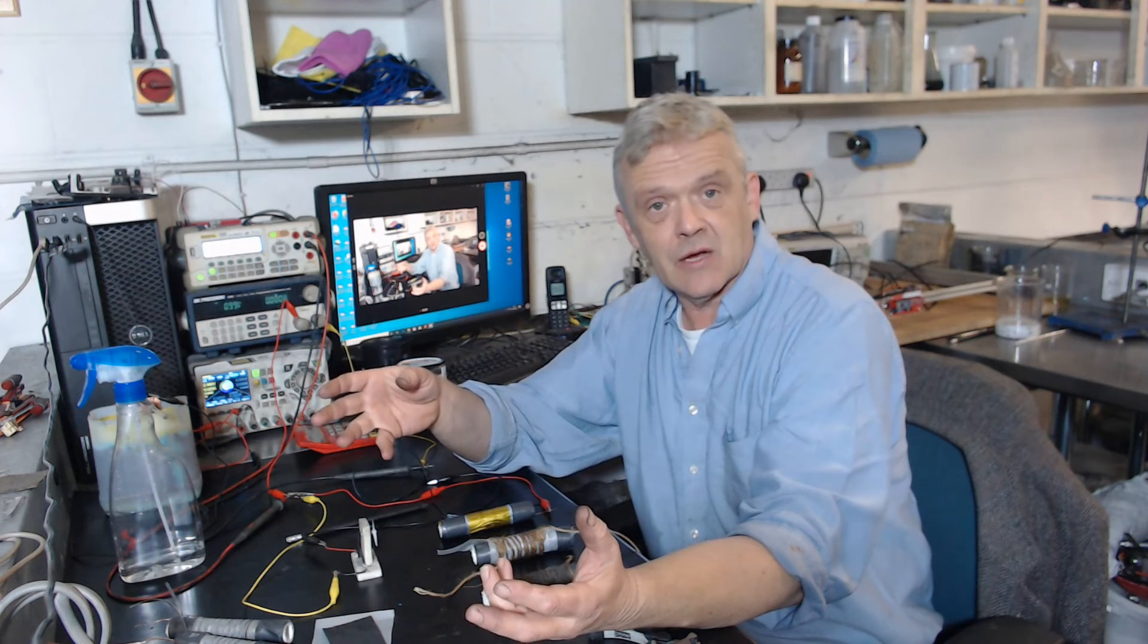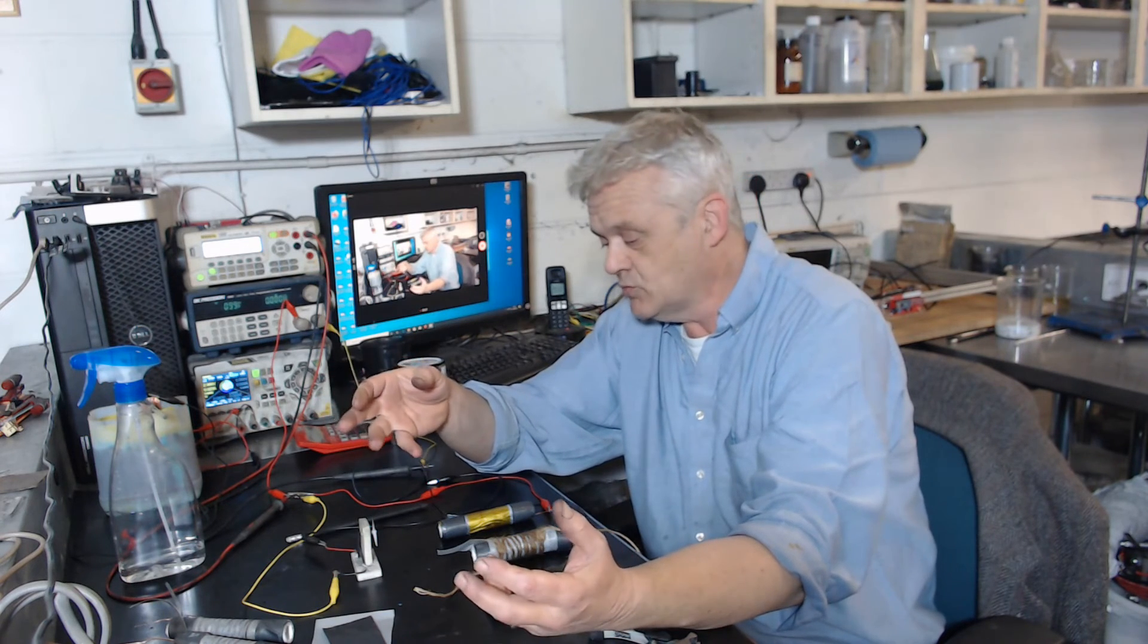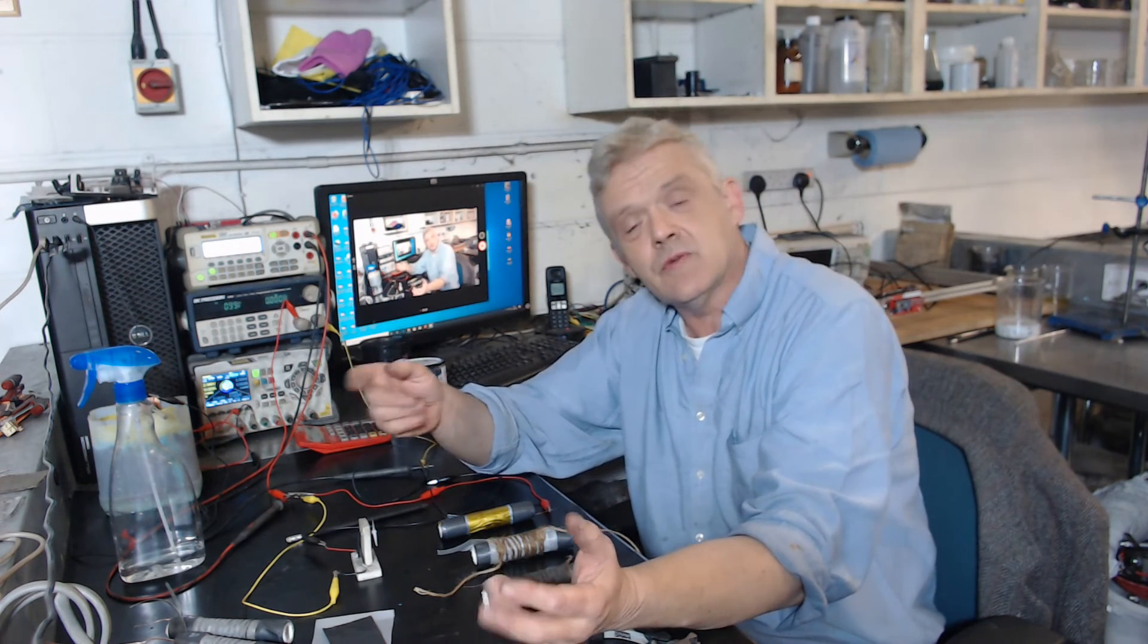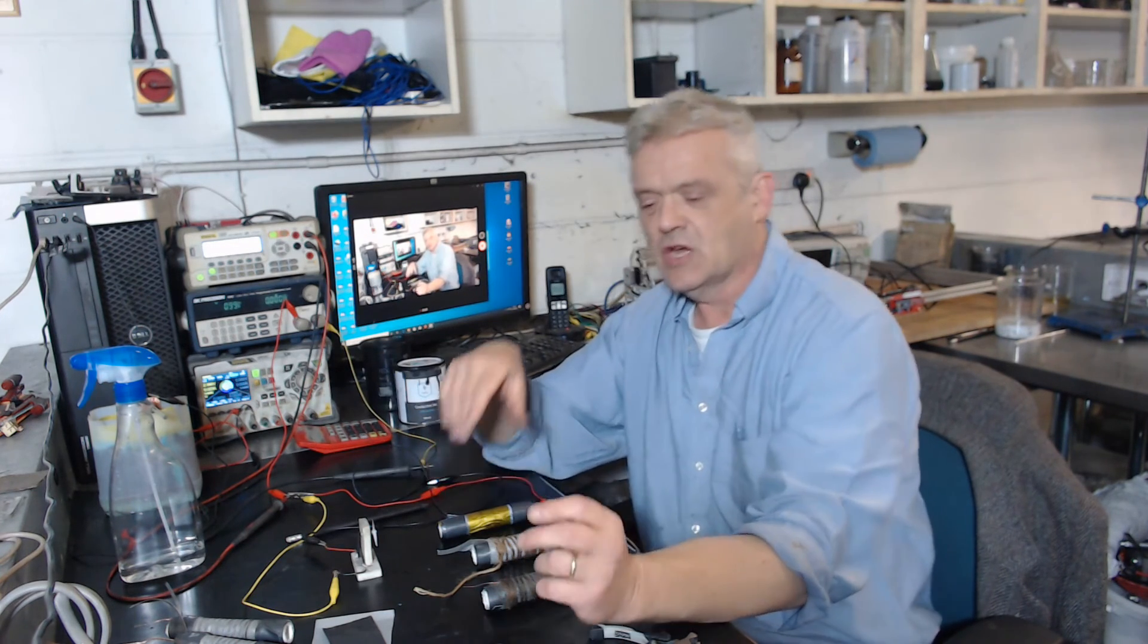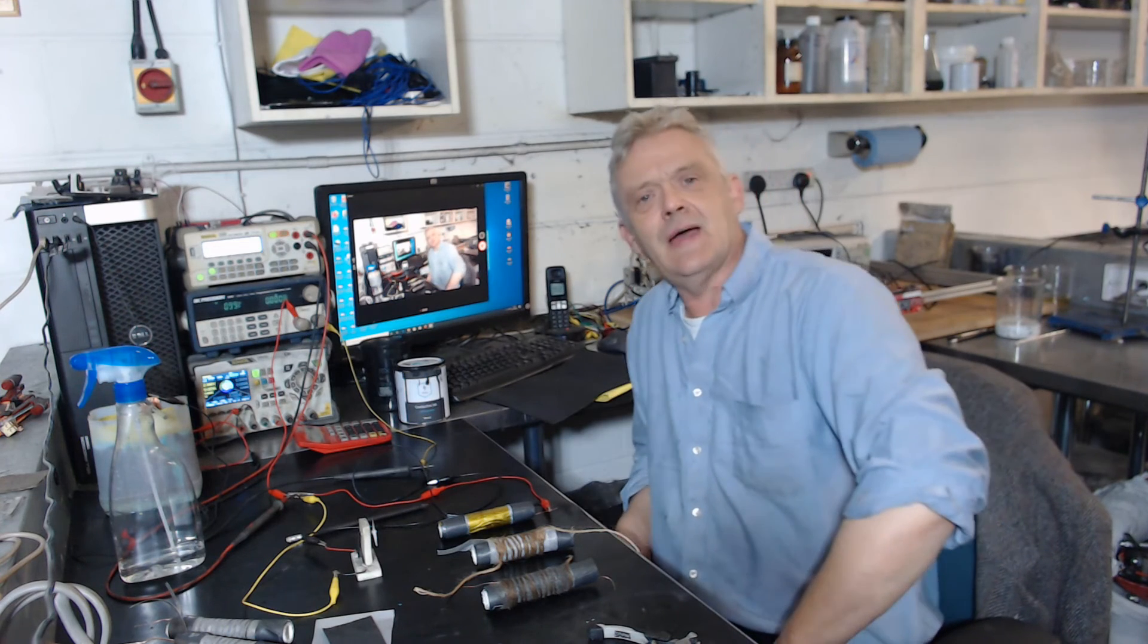whatever you happen to have lying around: aluminum, zinc, even try nickel if you can find some nickel wire. Then change the electrolytes, work with different electrolytes. So I thought I'd show you a range of metal air batteries, all based on the graphene cathode made from our graphene ink. And I'll put a